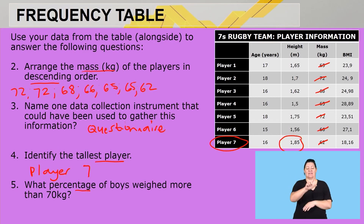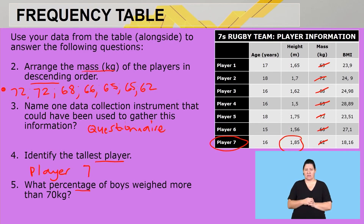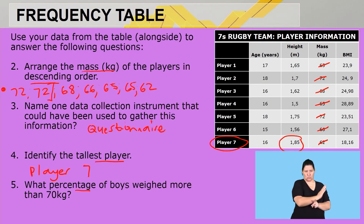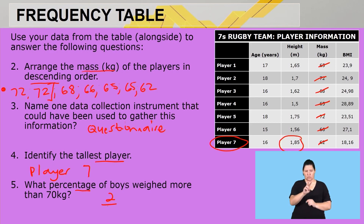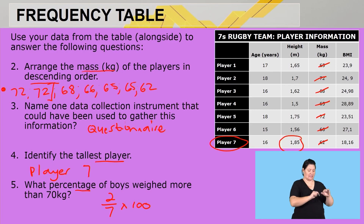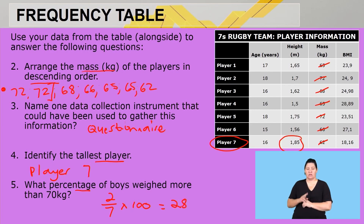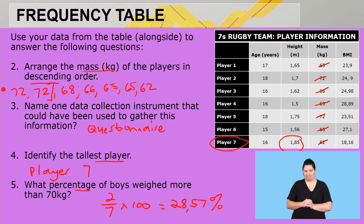Question five asks what percentage of boys weigh more than 70 kg. Looking at the mass column, two players weigh 72 kg each — so two out of seven boys weigh more than 70 kg. To get the percentage: 2 ÷ 7 × 100 = 28.57%. Rounded to two decimal places, the answer is 28.57%.